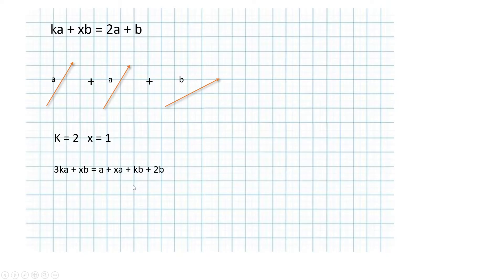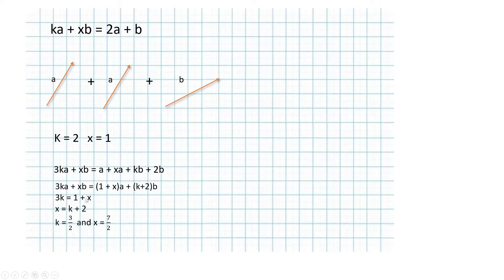Here is another example for you to try: work out the values of k and x by comparing the coefficients of both vectors. Comparing the A coefficients gives 3k = 1 + x, and comparing the B coefficients gives x = k + 2. Solving this simultaneous equation gives k = 3/2 and x = 7/2.